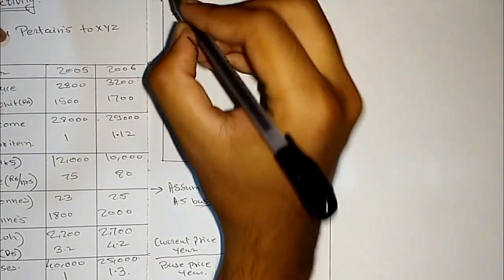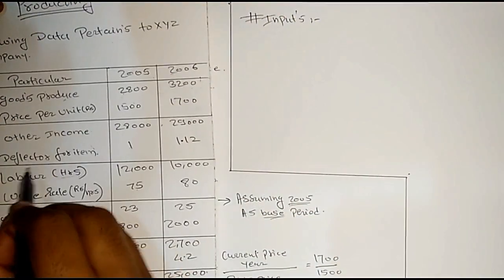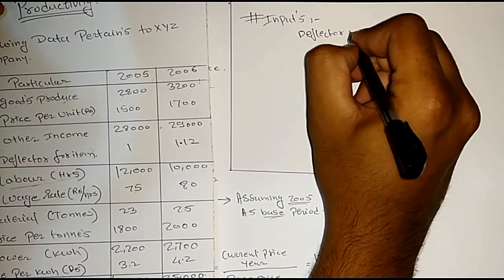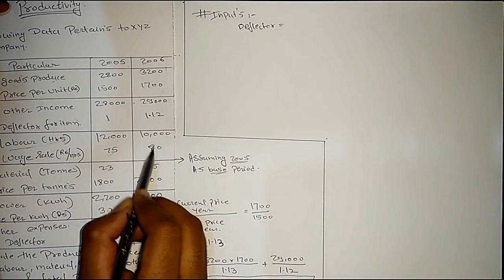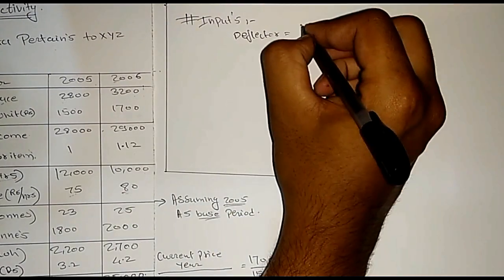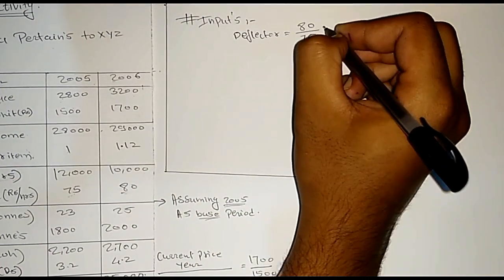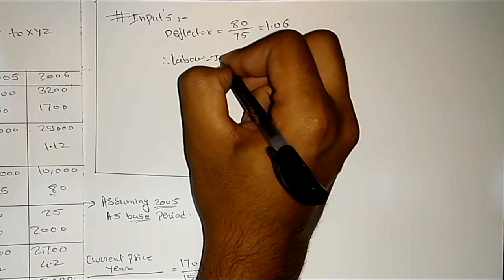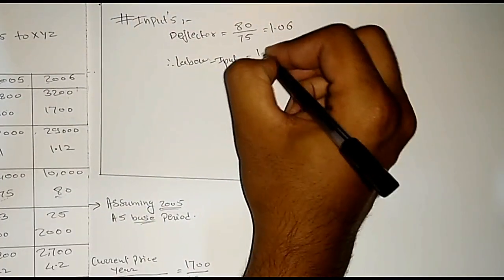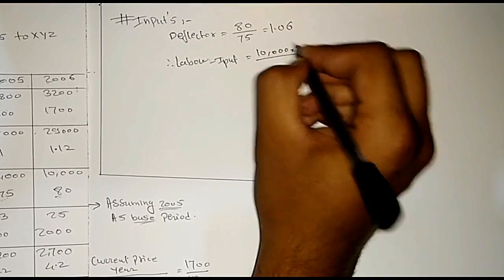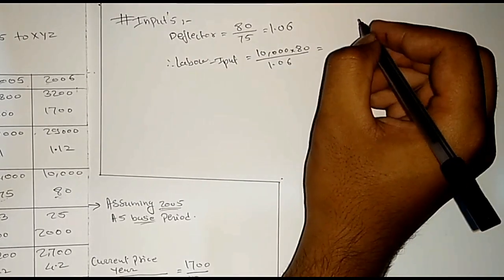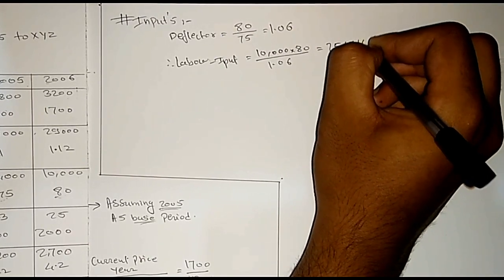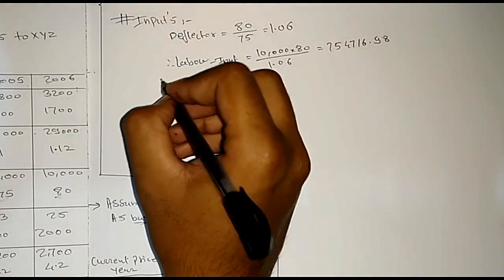Now calculate the input values. The deflector for labor equals current price divided by base price: 80 divided by 75, which equals 1.06. Therefore, labor input equals 10000 × 80 divided by deflector 1.06, giving a total labor input of 754,716.98.